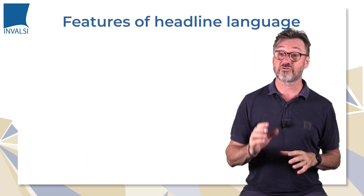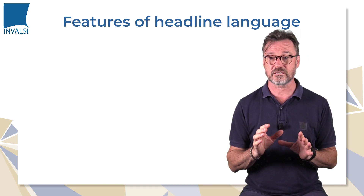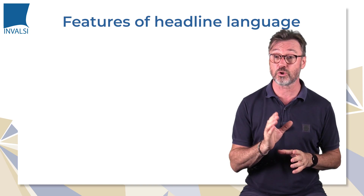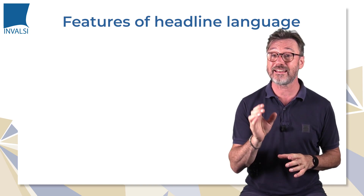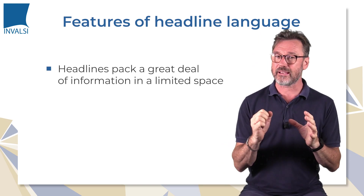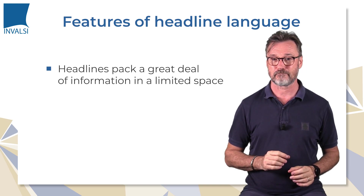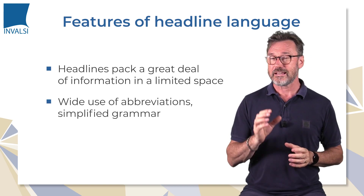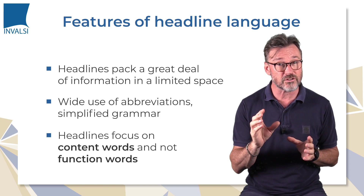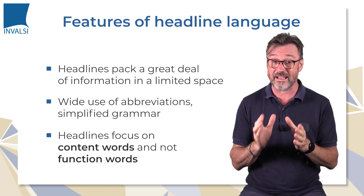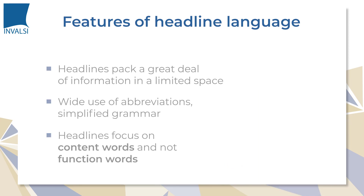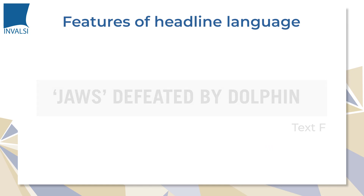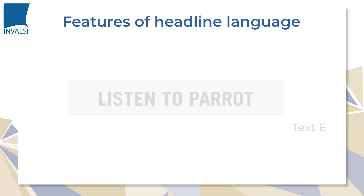As you've seen from the instructions for the previous activity, the last step asks students to write a headline for each text. In order to help them write proper headlines, we briefly introduce the features of headline language. Headlines pack a great deal of information in a limited space. As a consequence, there is a wide use of abbreviations and simplified grammar. Headlines focus on content words and not function words, because the main function of headlines is grabbing the reader's attention. Here are some possible headlines for some of the texts: 'Jaws Defeated by Dolphin', 'Cat Carbon Monoxide Detector', 'Listen to Parrot'.